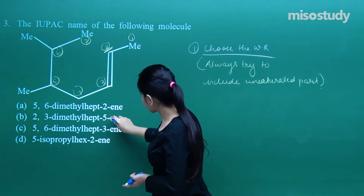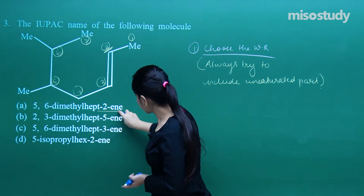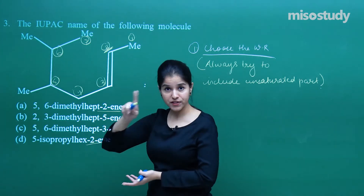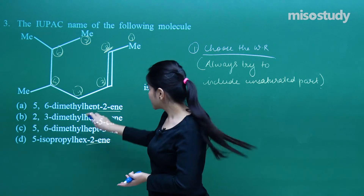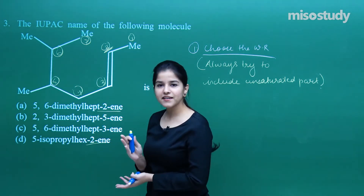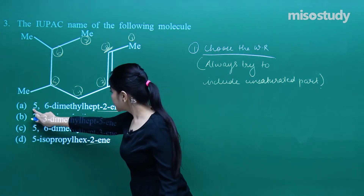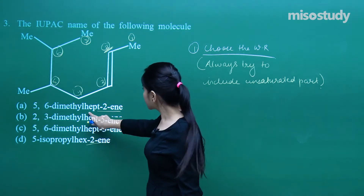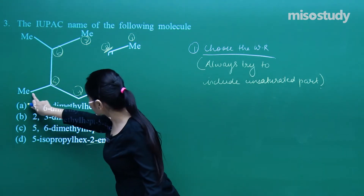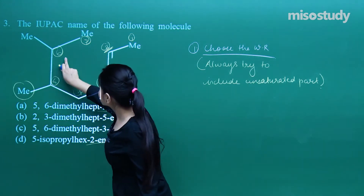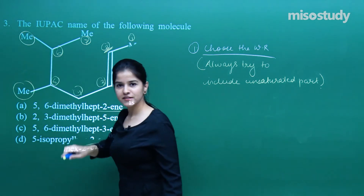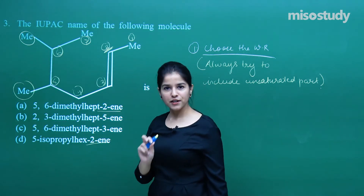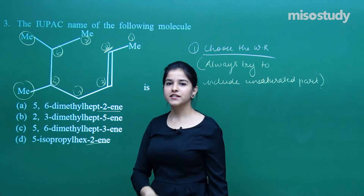So it should be 'hept' because of 7 carbon atoms — HEPT-2-ene. That is our answer. But let us just confirm — is it having similar substituents? On to the fifth, I have got methyl. On to the sixth, I have got methyl. So 5,6-dimethyl — that means we have got the correct answer: 5,6-dimethylhept-2-ene.